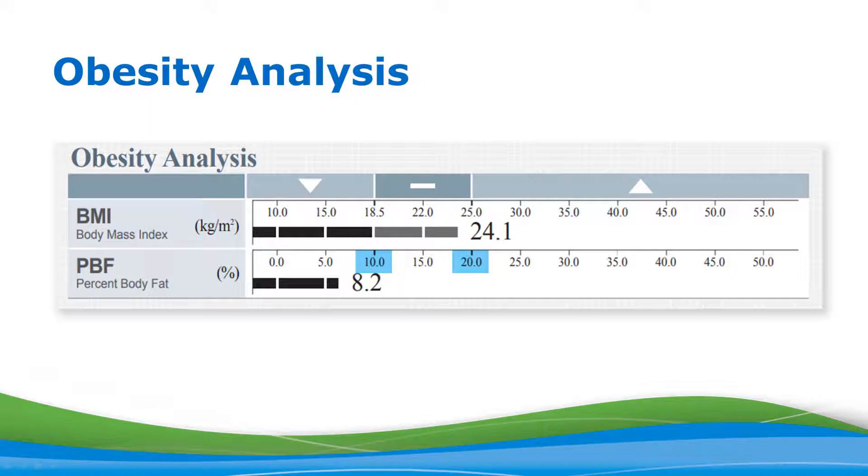Our next section discusses the obesity analysis. We use two values: BMI, also known as body mass index, which is measured by kilograms divided by meters squared, and percent body fat, which is body fat mass divided by total body weight. Normal range for BMI is 18.5 to 25 and is considered to carry the least health risk. This range comes from the World Health Organization.